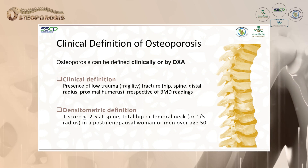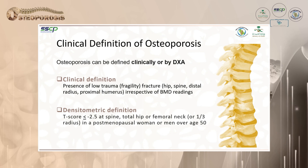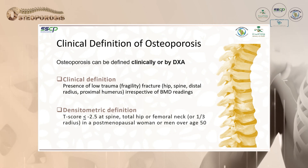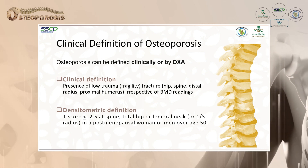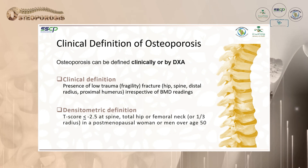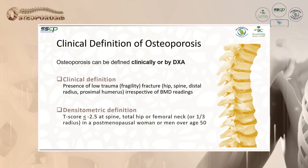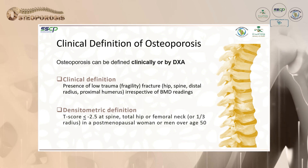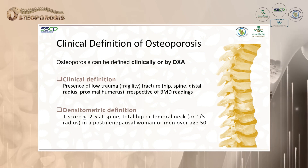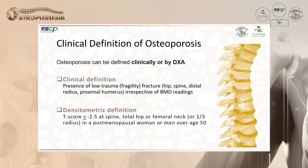Osteoporosis can be defined either clinically or by DEXA. The clinical definition applies when there is a fragility fracture of the hip, spine, distal radius, or proximal humerus, irrespective of BMD reading. The densitometry definition is a T-score less than minus 2.5 at the spine, total hip, femoral neck, or one-third radius in postmenopausal women or men over age 50.